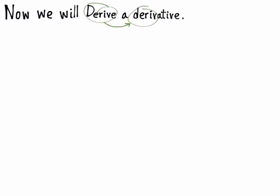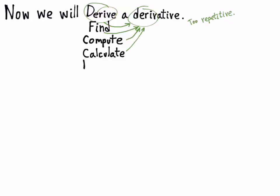It's a transitive verb — you derive something. The object of the verb is 'derivative.' We don't usually say we're going to derive a derivative because it sounds repetitive. We could use a different verb instead: find a derivative, compute a derivative, calculate a derivative, discover a derivative, reveal a derivative. But all of those verbs are transitive verbs, and they all have 'derivative' as their object.